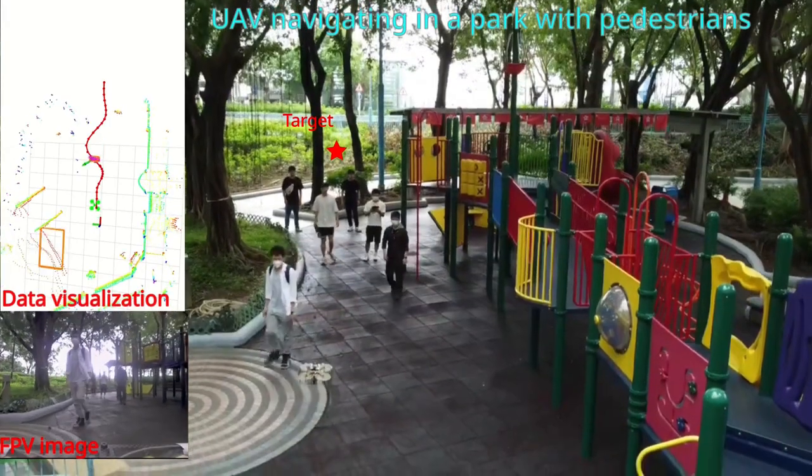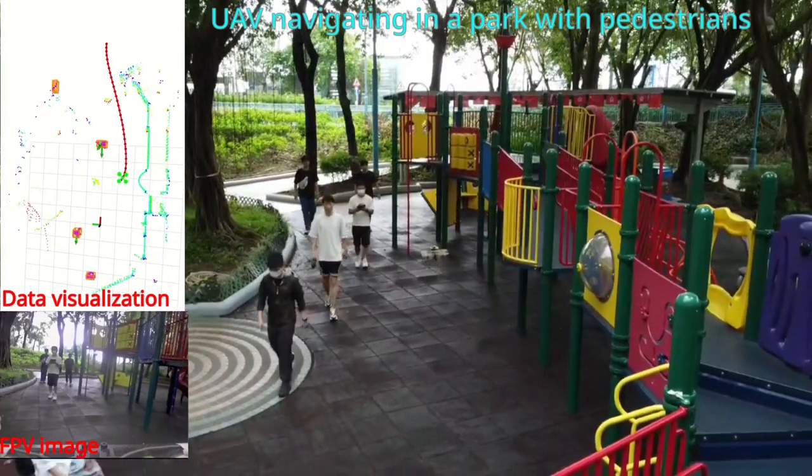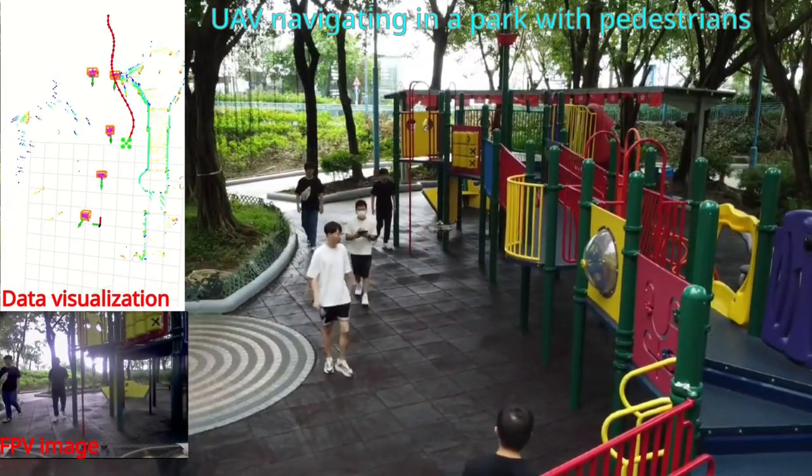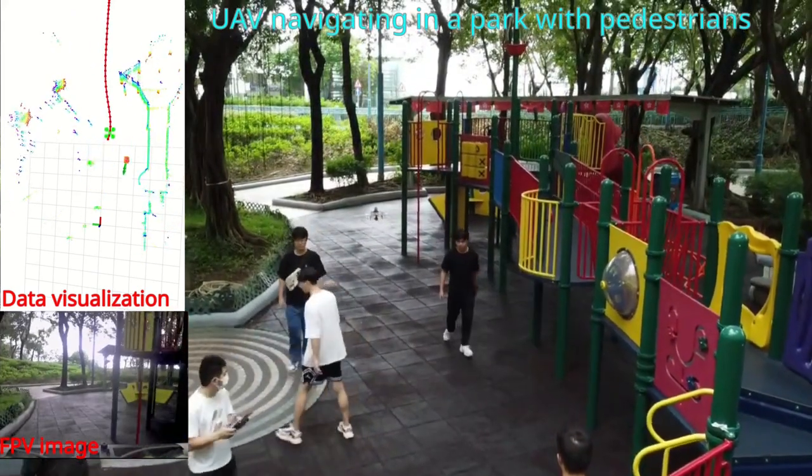The second scenario is a park sidewalk full of pedestrians and surrounded by common facilities and trees. The UAV can successfully pass all of the pedestrians without collisions with people and the surrounding facilities.